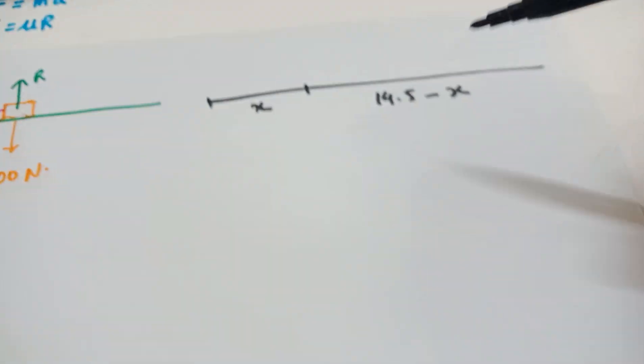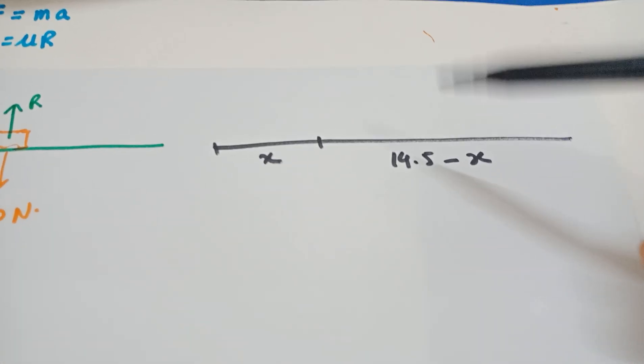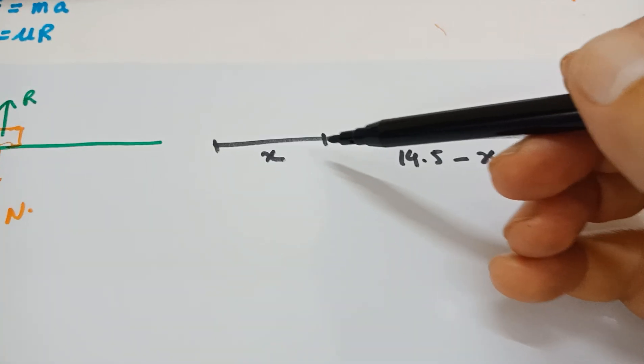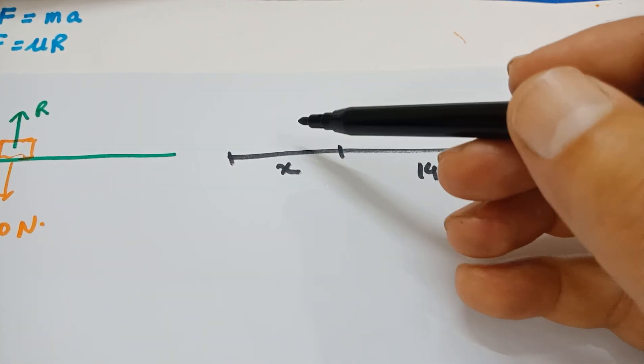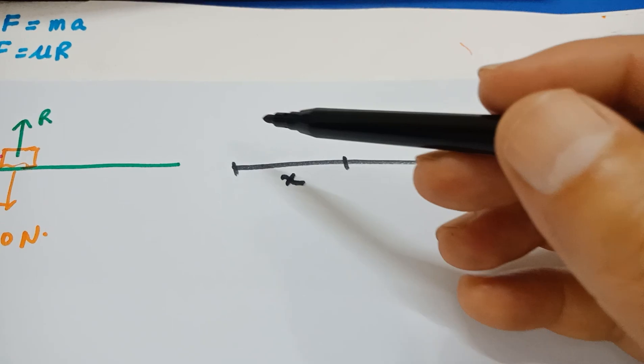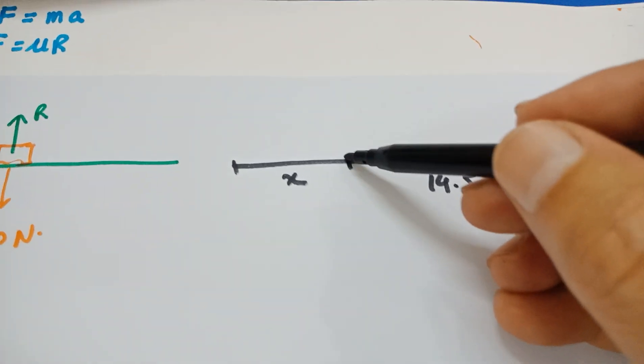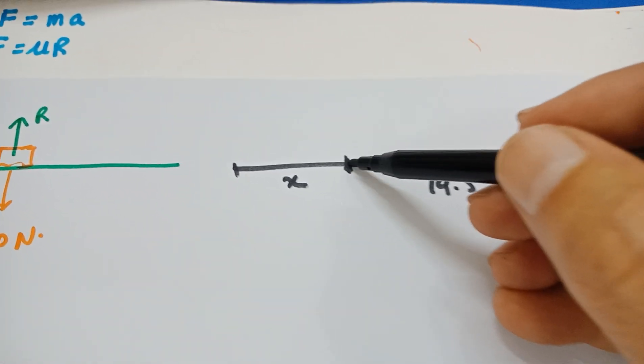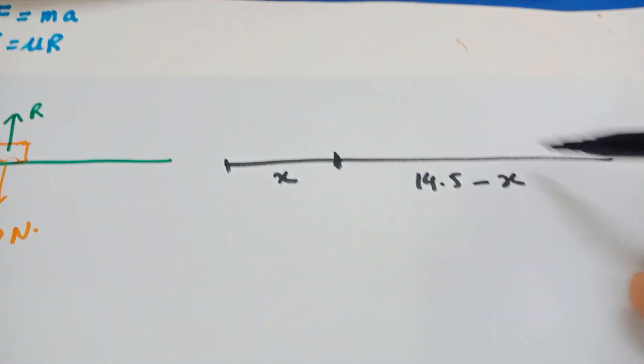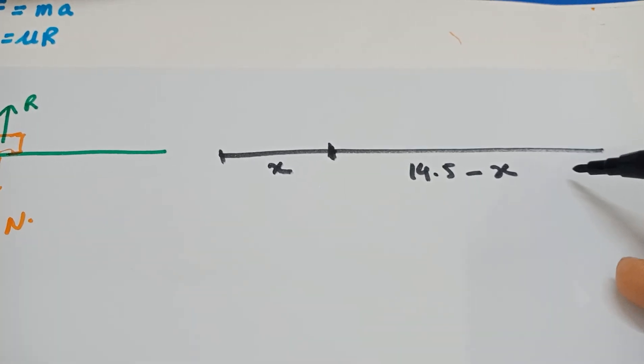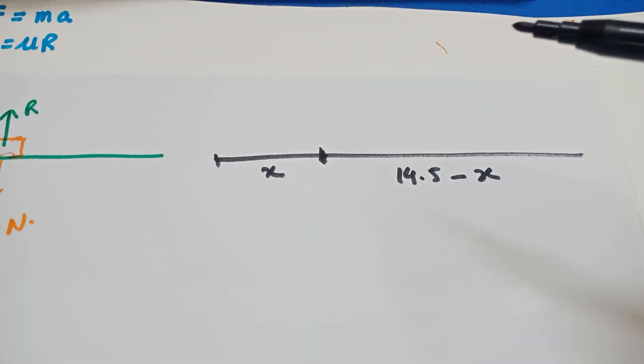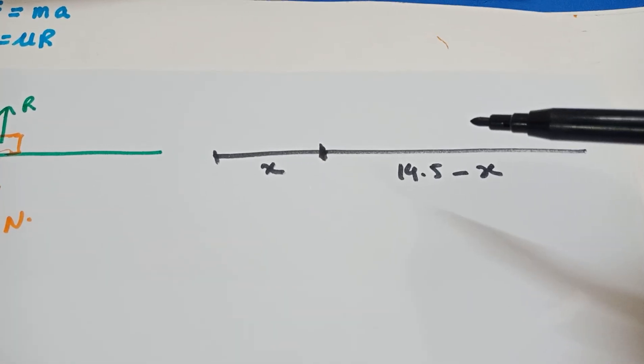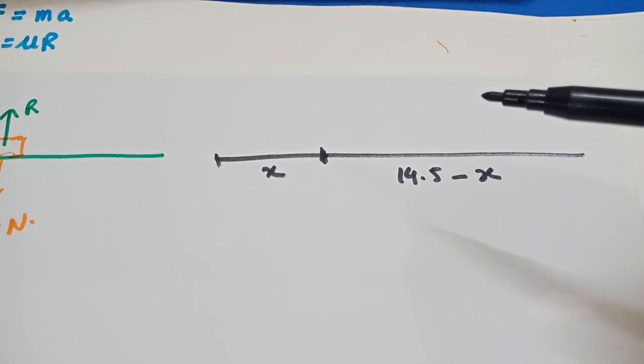I have drawn another diagram over here. Now this is the distance x. I'll suppose that this is being covered when both the forces were trying to halt that box. The frictional force and the tension, the string. And here is the point where the string breaks, and this distance 14.5 minus x is going to be covered, while only the frictional force is trying to stop that box.